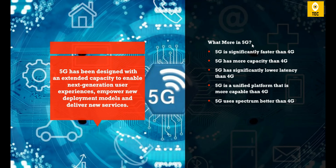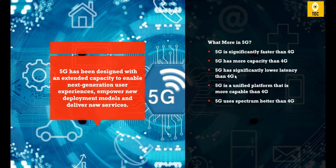Compared to 4G, 5G is significantly faster — it is a clear differentiator. 5G also has more capacity in terms of data transfer and bandwidth, and it can push and pull data much more effectively. It also has significantly lower latency. Latency is the amount of time spent to send data from point A to point B, so lower latency means faster data transfer. 5G is a unified platform that is more capable than 4G.